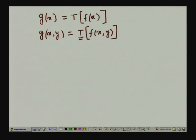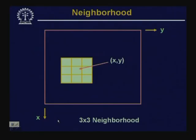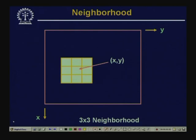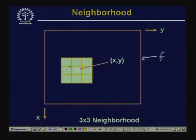The neighborhood of a point (x, y) is usually a square sub-image centered at point (x, y). In the figure, the outer rectangle represents image f, and we have taken a pixel at a particular location (x, y). This shows a 3×3 neighborhood around the pixel point (x, y) in image f. For different applications, the neighborhood size may be different — we can have 5×5, 7×7, and so on, depending on the type of image and operation required.